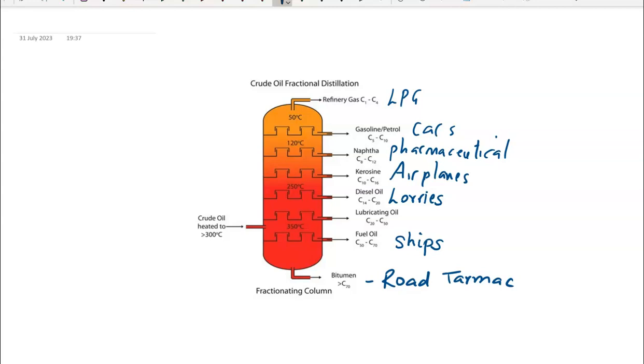At the top of the column, we established they have smaller hydrocarbon chains. Let's just call them small molecules on the top of your fractional distillation column. In terms of properties, if they're asking in the exam, they're going to have low boiling points.